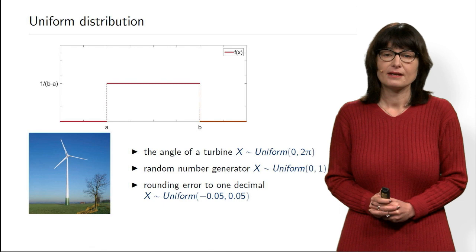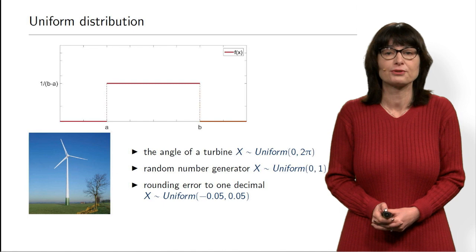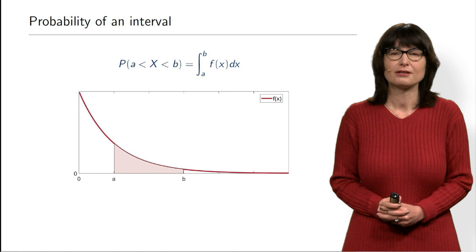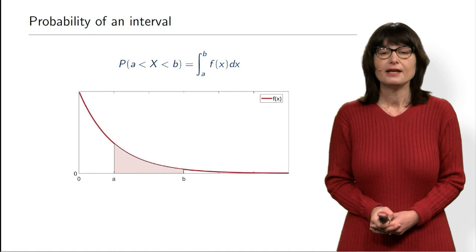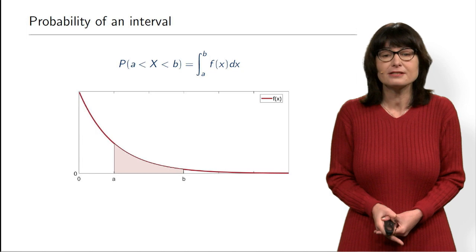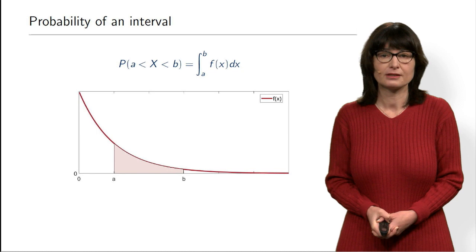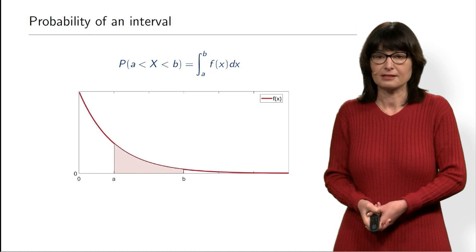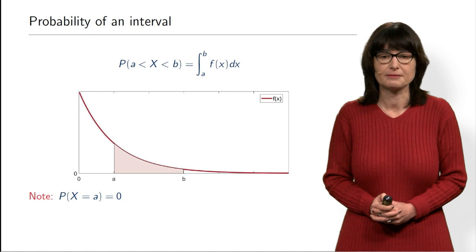Now let's see what computations we can do with the density. The most important one is computing the probability that your random variable falls in a certain interval. This probability equals the area under the density curve between A and B — the pink-shaded area — which you compute by integrating the density. The density times dx gives the probability of a small interval, and the probability of a large interval is the sum of probabilities of smaller intervals.